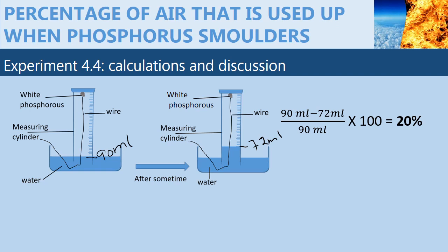We take the initial minus the final, divide by the initial, multiply by 100, and we get 20%. This is close to the theoretical 21%.